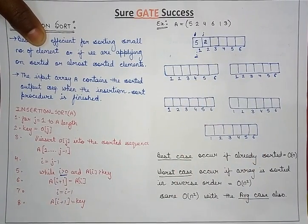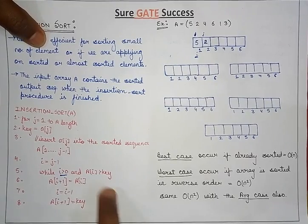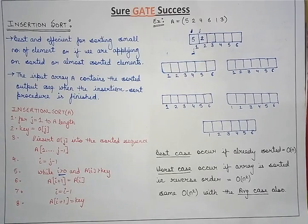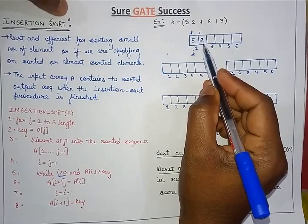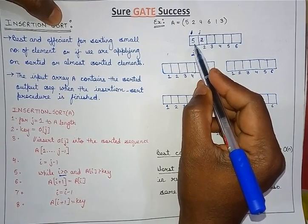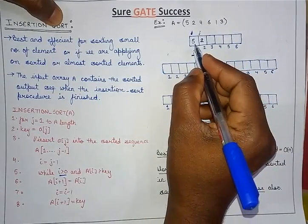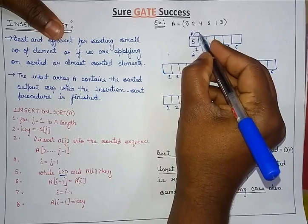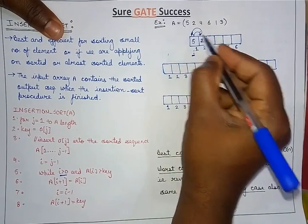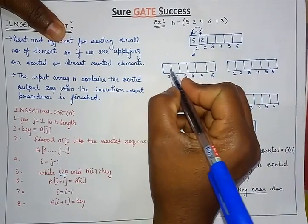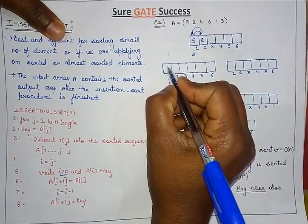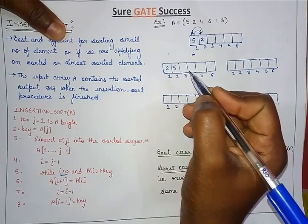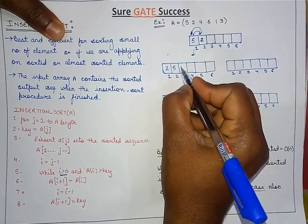The key is a[j] = 2. We compare a[i] with the key — a[i] is greater than key (5 > 2), so we swap these values. In the array, the values become 2 and 5. Similarly, we insert the next element, which is 4.